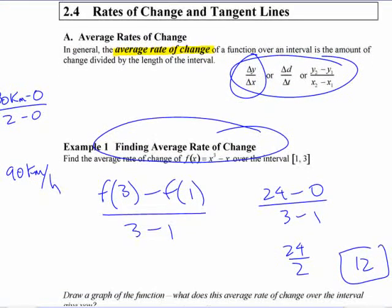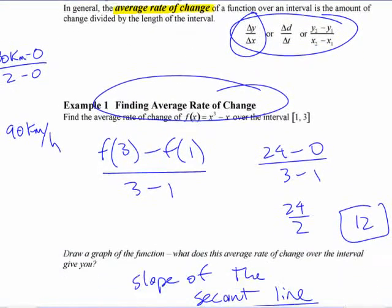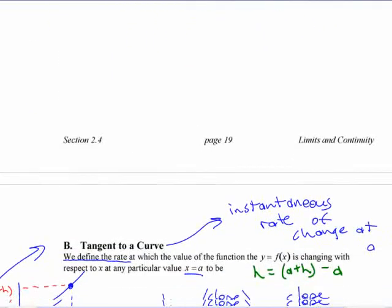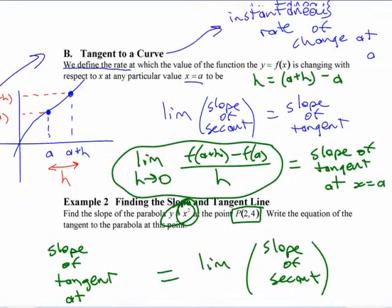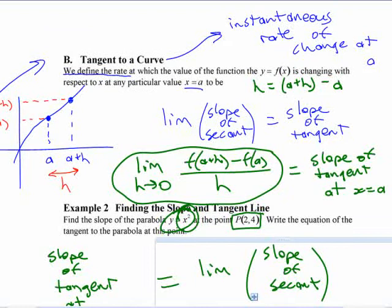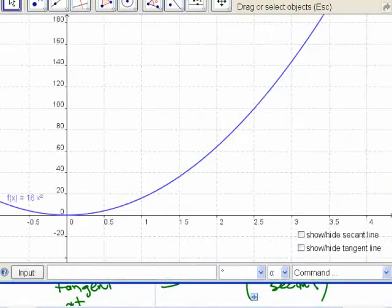All right, so rates of change and tangent lines. We looked at the connection between the tangent line and the secant line. I think visually is the way to remember it here.